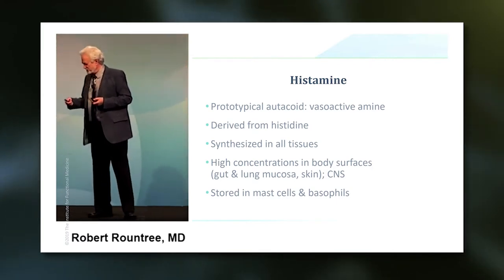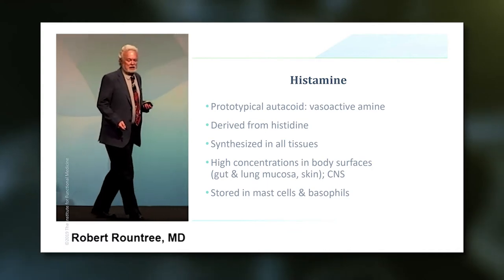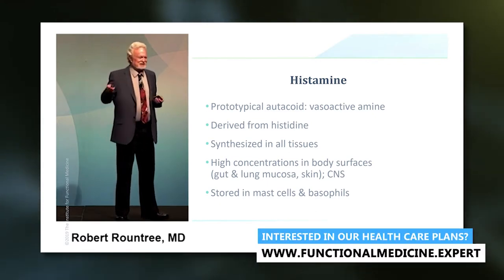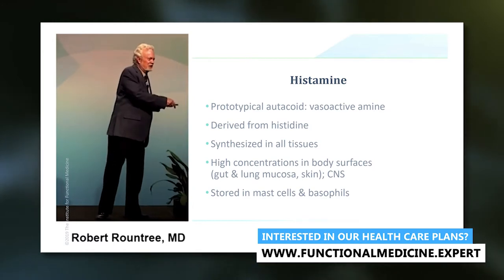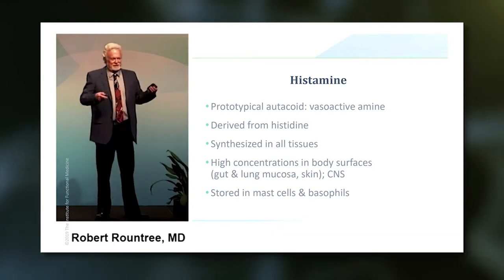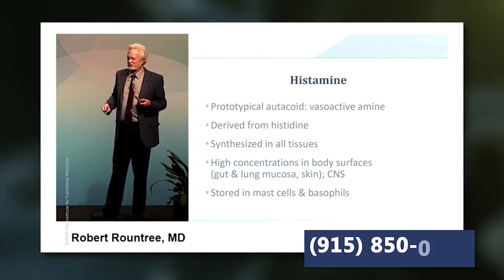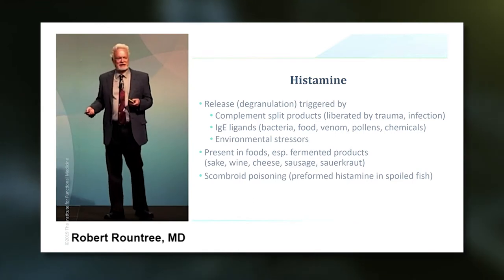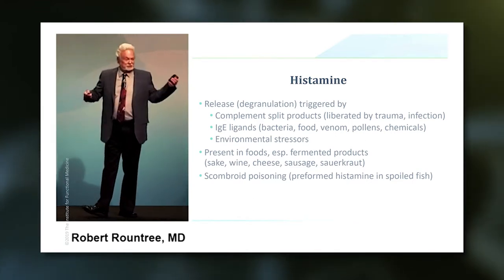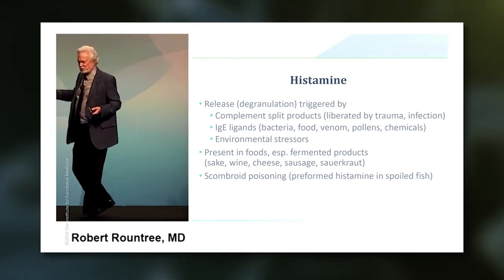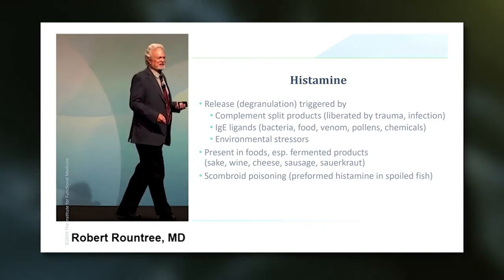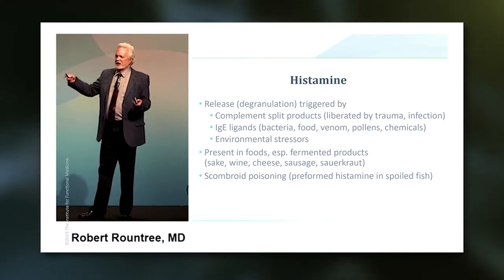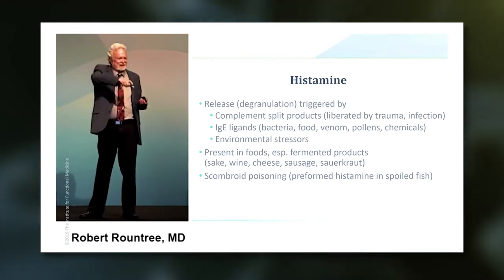Histamine is a very interesting compound derived from the amino acid histidine, made in all tissues in the body, concentrated in body surfaces — but especially in mast cells and basophils. What's the difference between mast cells and basophils? Mast cells are sessile, confined to tissues like the skin and mucous membranes. Basophils are in circulation. But otherwise they're the same cells and they do the same thing: they release histamine. What turns on that histamine production? Complement split products, IgE ligands — that requires prior exposure. A person isn't born with an allergy to bee venom; they have to acquire it. So mast cells kind of span the bridge between innate immunity and acquired immunity.